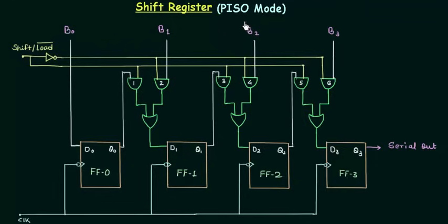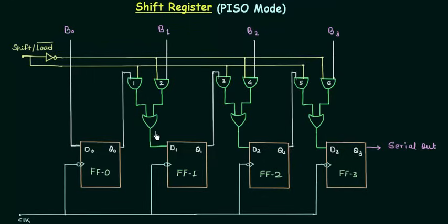In this lecture I will teach you parallel input serial output mode of shift register. In this mode the bits are entered in parallel, or simultaneously. We have 4 bits B0, B1, B2 and B3 and we need to enter them in parallel manner. One very important thing in this circuit is that the output of the first flip flop Q0 is connected to the input of the next flip flop D1 via a combinational circuit. In this combinational circuit we have two AND gates and one OR gate. There are two modes in which this circuit can work: the load mode and the shift mode.